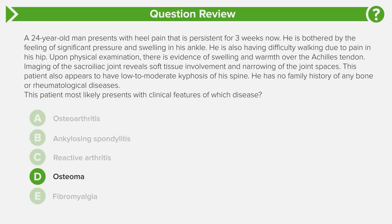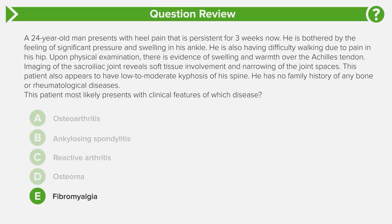Answer choice D is an osteoma — there's no comment here about B-type symptoms, no mass, no weight loss, no night sweats, nothing to suggest a bone tumor, so we can cross this one off. Answer choice E, fibromyalgia, is a systemic pain syndrome with trigger points used to diagnose the condition, seen much more commonly in females than males, and it often coexists with depression. That's a pain syndrome, not a form of arthritis, so it doesn't fit the clinical picture of ankylosing spondylitis, which is what this question is really testing.